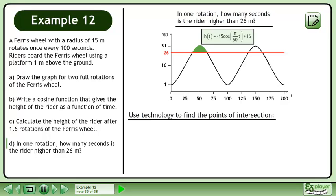Now we'll use technology to find the points of intersection. Set the view window to x min equals 0, x max equals 200, x scale equals 25, and y min equals 0, y max equals 32, y scale equals 2, and graph each line.